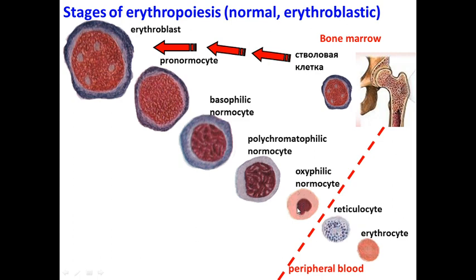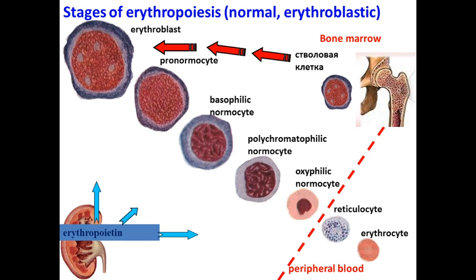Having a nucleus means these cells can divide. Our erythroid cells can divide until oxyphilic normocytes; reticulocytes cannot divide and only mature into erythrocytes within 24 hours. In peripheral blood we have only matured erythrocytes and a small amount of reticulocytes, from 0.5 to 2 percent. Production of erythrocytes is regulated by colony stimulating factors of bone marrow and also by the hormone erythropoietin, which is produced in the kidney.